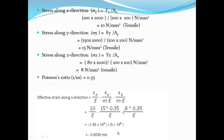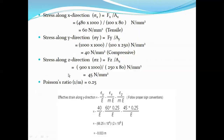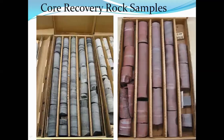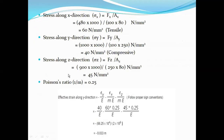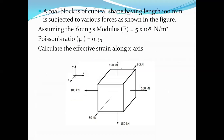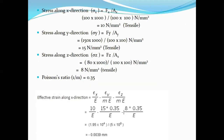Upon simplifying, the effective strain along the x-axis is 0.0039 mm. Hope you understood. The key concept here is not memorizing the formula but understanding the sign convention — which lateral strain contributions favor or oppose the direction of interest — that is very important.